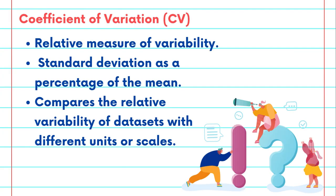The Coefficient of Variation or CV is a relative measure of variability that expresses the standard deviation as a percentage of the mean. It helps compare the relative variability of datasets with different units or scales.